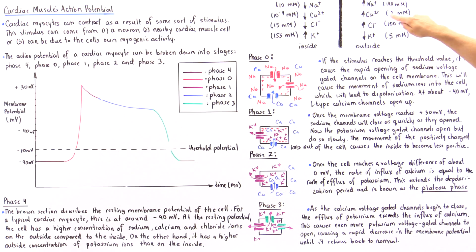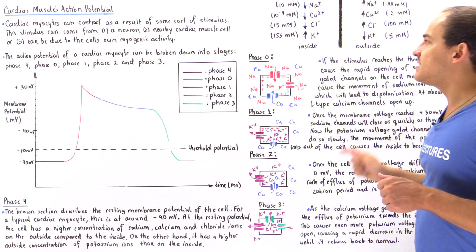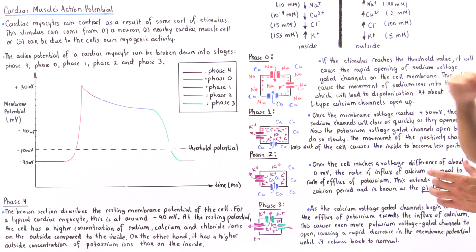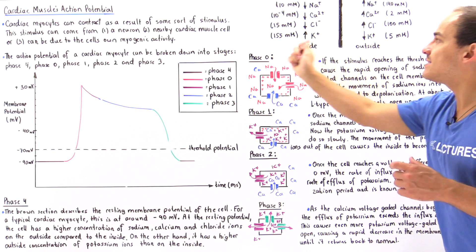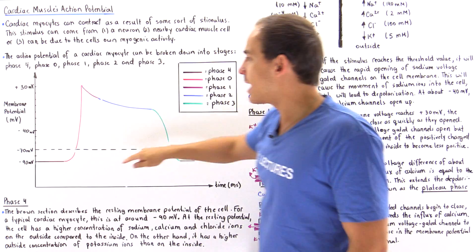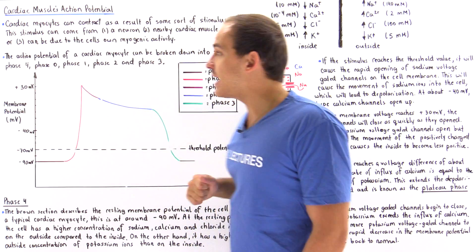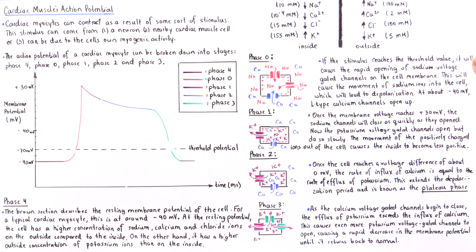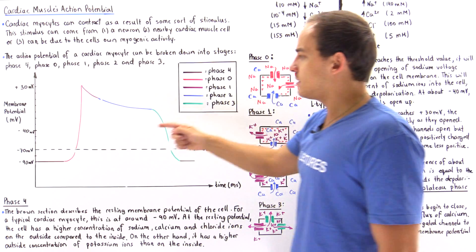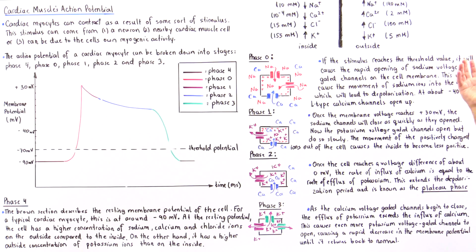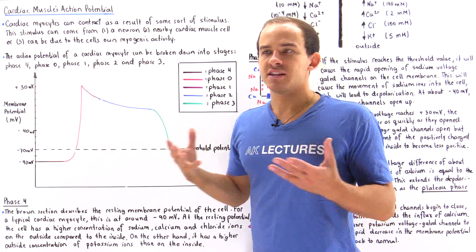When the cell is resting, the sodium and calcium voltage-gated channels are closed. However, potassium is able to leak to the outside of the cell. Because potassium leaks slightly to the outside, that is exactly why the membrane is negative on the inside compared to the outside — this leakage of potassium creates a slightly negative membrane potential on the inside. So phase four is the resting membrane potential.